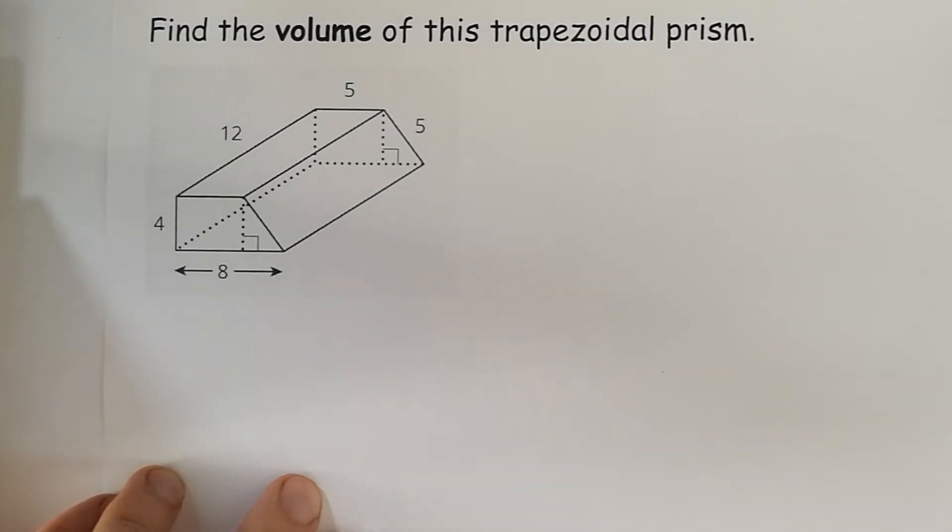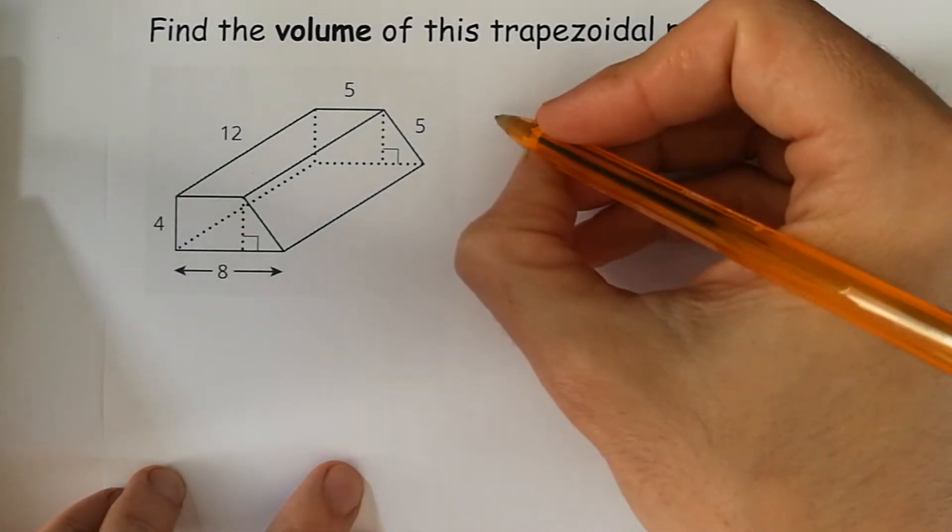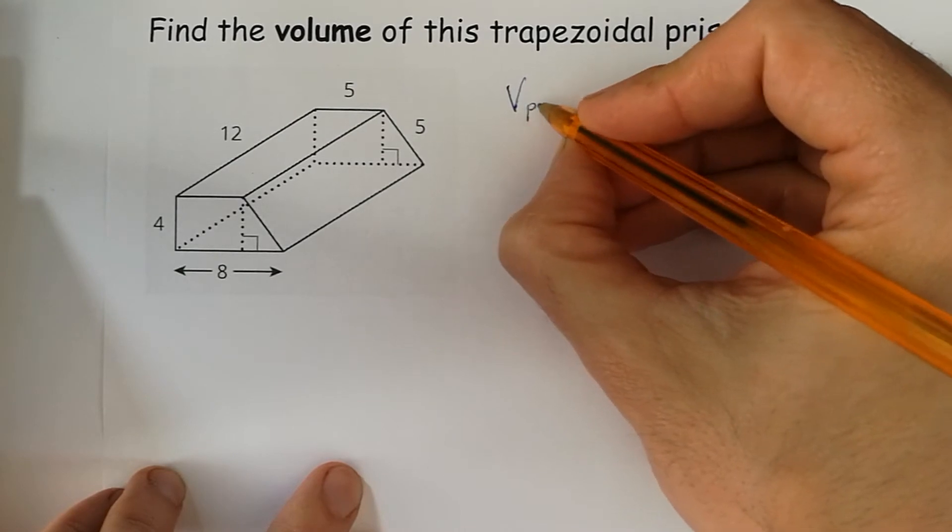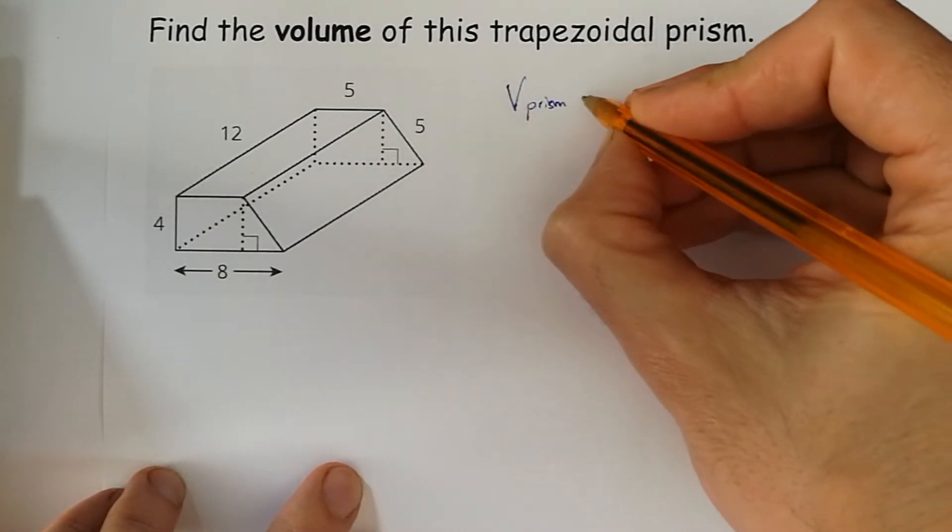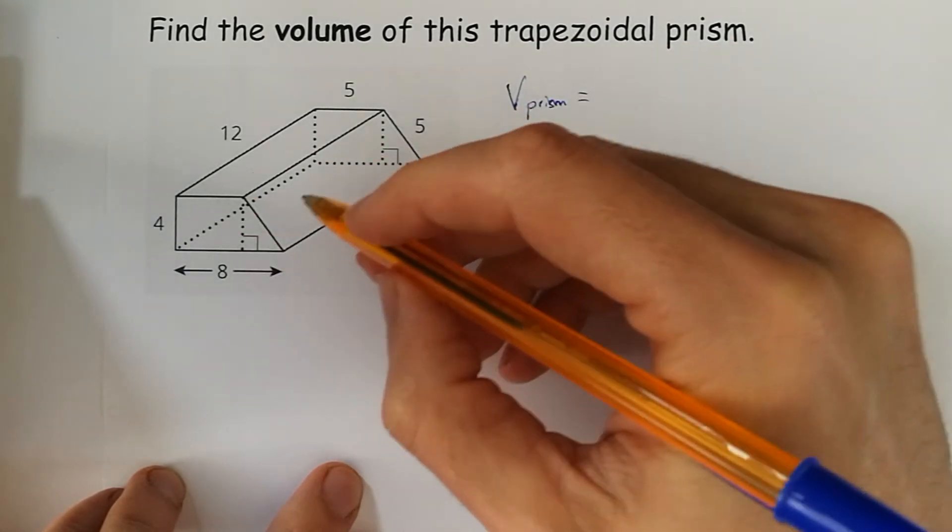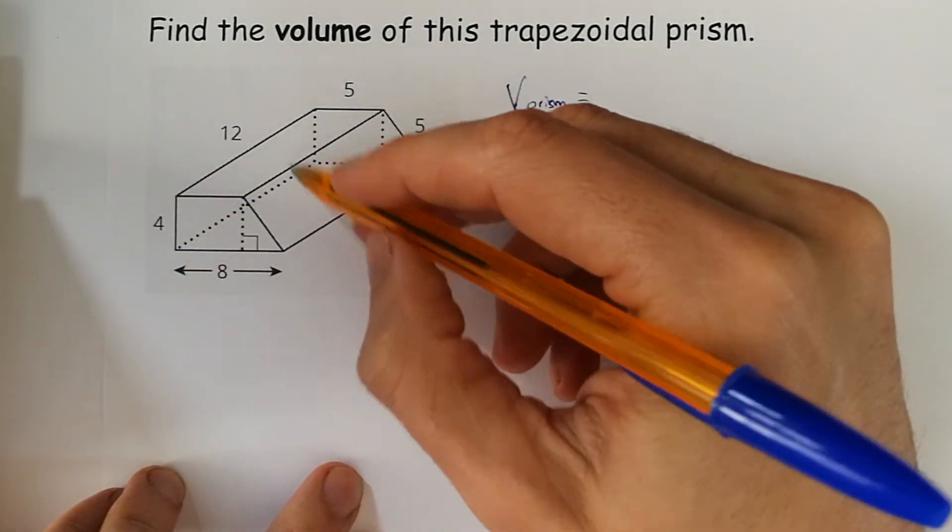Find the volume of this trapezoidal prism. Well, the volume of a prism is very simple—it's just the area of a base or a cross section,